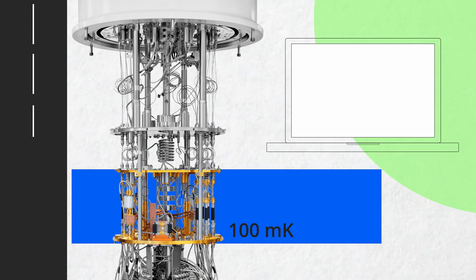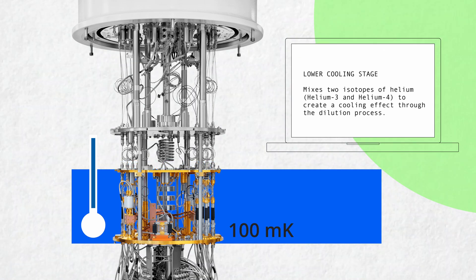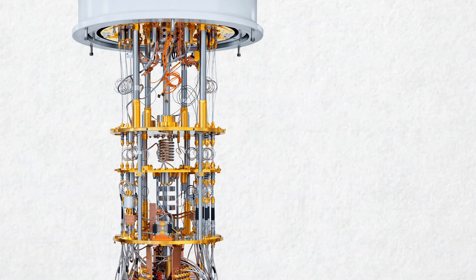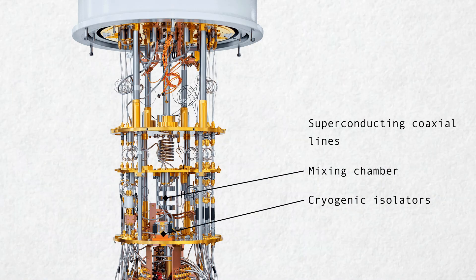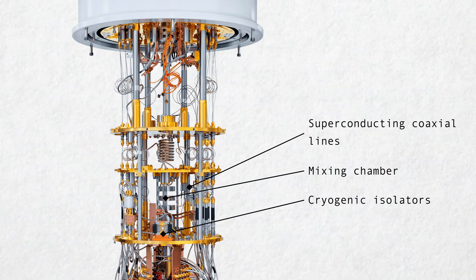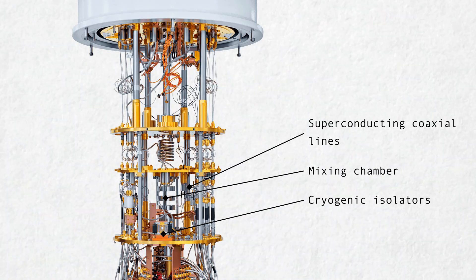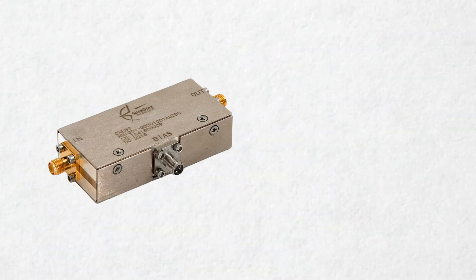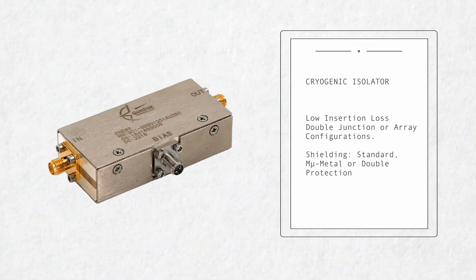By the time you hit 100 mK, nearly a tenth of a degree above absolute zero, cryogenic isolators kick in. These one-way valves for microwave signals block any back-flowing noise that could otherwise ride shotgun on your readout lines. It's like peeling away layers of an onion, each skin tuned to trap more heat, until the core is so cold that thermal energy barely exists.